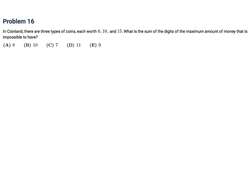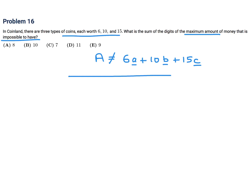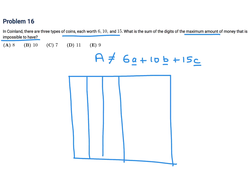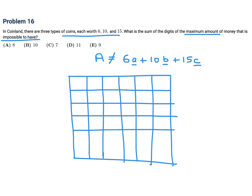In coin land, there are 3 types of coins worth 6, 10, and 15. What is the sum of the digits of the maximum amount of money that is impossible to have? Any amount would be 6A + 10B + 15C for non-negative integers A, B, C. We need to find the largest value that cannot be expressed this way.